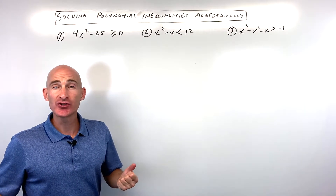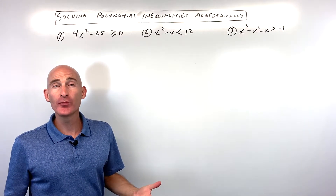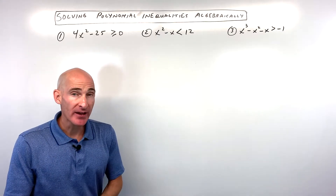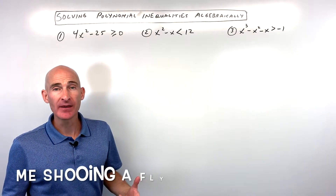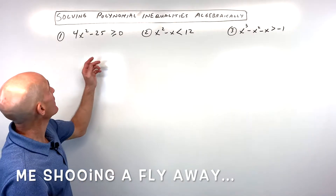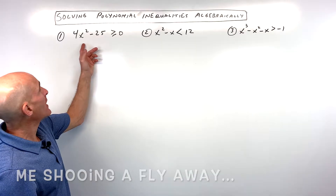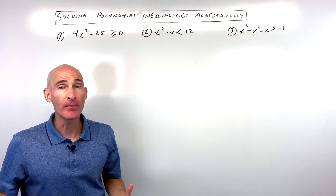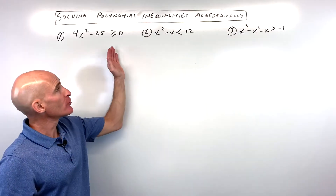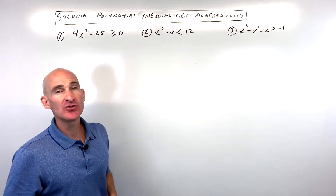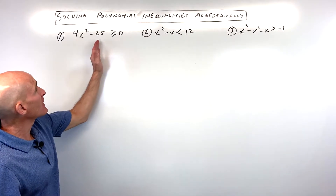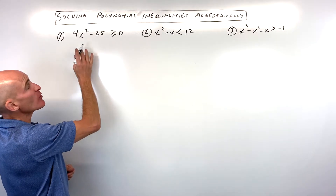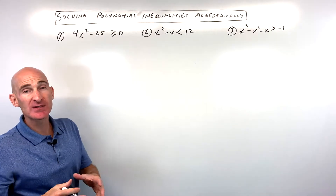In this video, you're going to learn how to solve polynomial inequalities algebraically, and we're going to use the number line to do that. Basically, what you want to do is first get everything on one side of the inequality and set it to zero. We're going to go through three examples. The first thing we want to do is get everything on one side, set it to zero, and then factor it as much as we can.